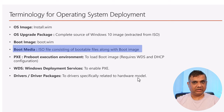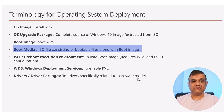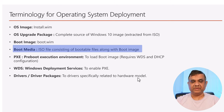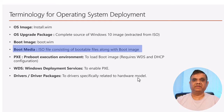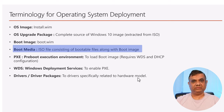Boot media is an ISO file which consists of not only the boot image but all bootable files required. For a virtual machine you can mount it and boot your device, and if you copy that ISO content to a USB and make it bootable, you can boot a bare metal device. So boot media launches the boot image, and once the boot image is launched you see the list of task sequences and can initiate one.